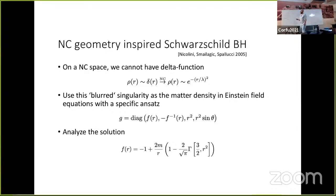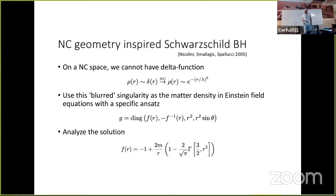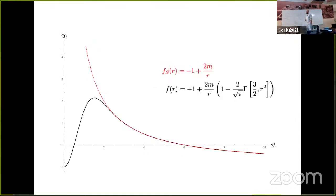They took this solution and plugged it into the Einstein field equations to get a solution in the Schwarzschild form. The solution looks like the Schwarzschild solution minus one plus two M over R plus some correction, in units where the Planck length equals one. So after a couple of Planck lengths from the singularity it is basically the same as the Schwarzschild solution. The red line is the standard Schwarzschild solution, and as you move very close to the singularity their solution goes down to minus one, while far away the solutions are the same.